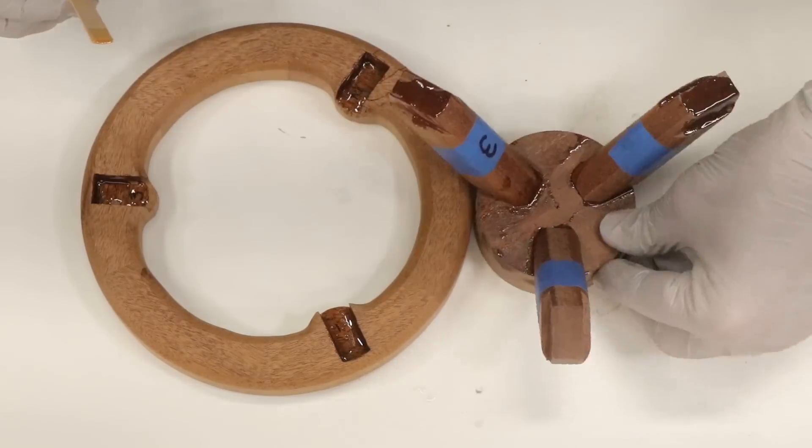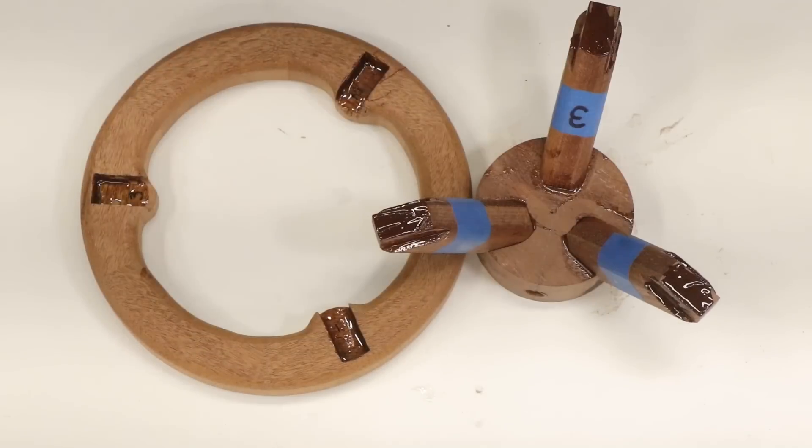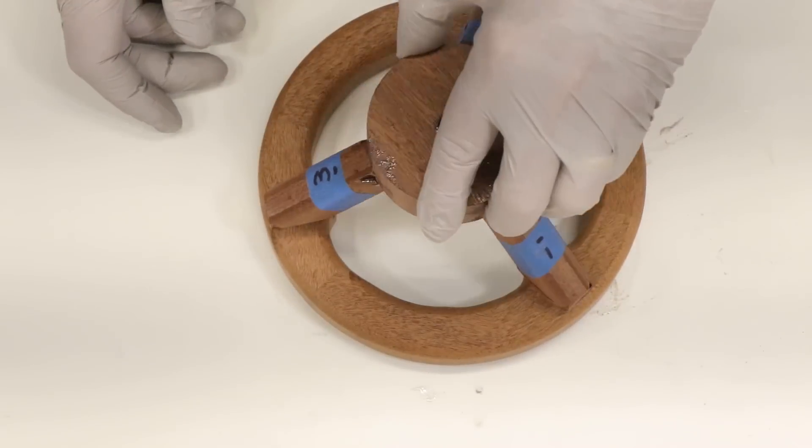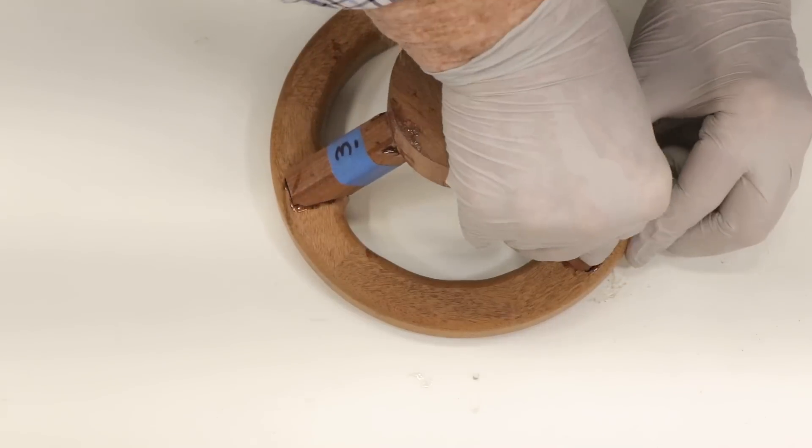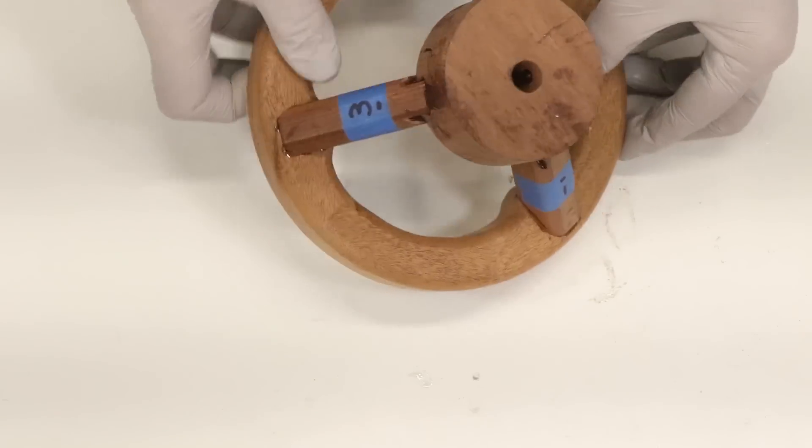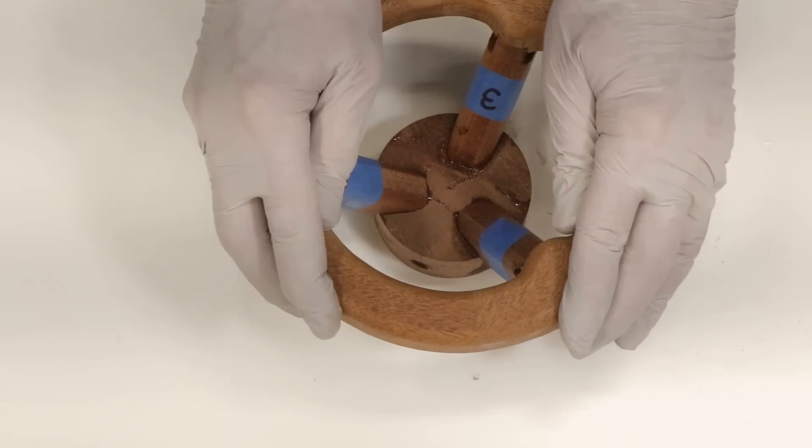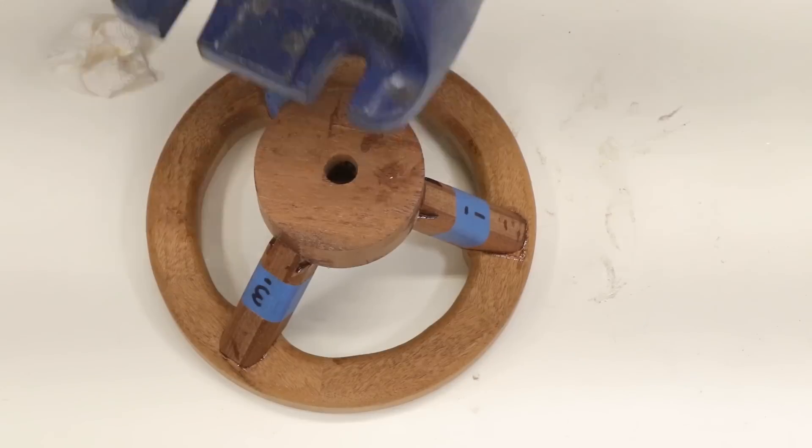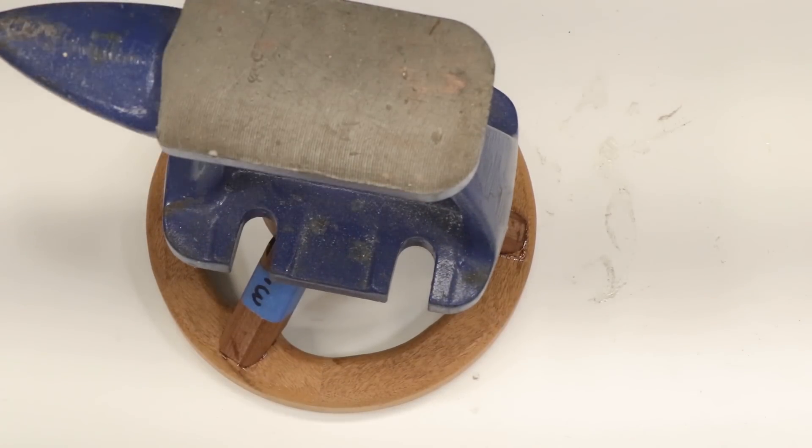I glued all three spokes into the hub and then turned that assembly over and inserted all three spokes into the wheel. I was relieved to find that all the joints closed relatively easily on the first try.